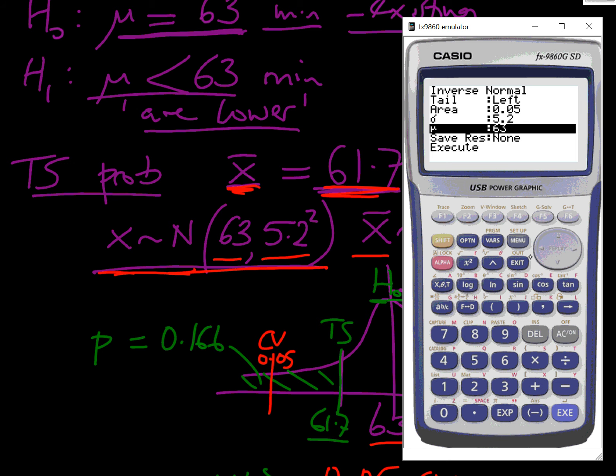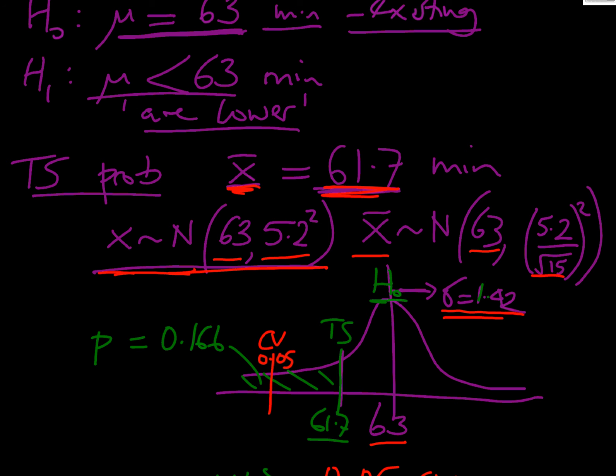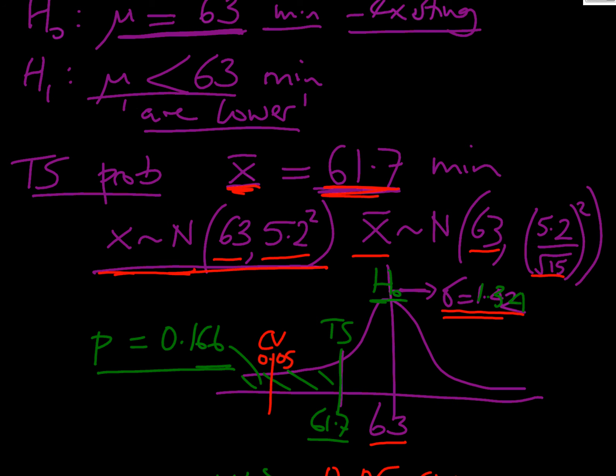Distribution, normal NCD. Now we're interested in our lower value is going to be a very big negative number because we're going to minus infinity. Our upper value is 61.7 because we're looking at our left tail. Our standard deviation, it's our 5.2, but we've got to divide by our square root of 15. So that's our 1.34. That should be 1.34 there. Our mean remains at 63. Pressing our execute, we get our probability of our test statistic is 0.166. So that's the area under the curve.